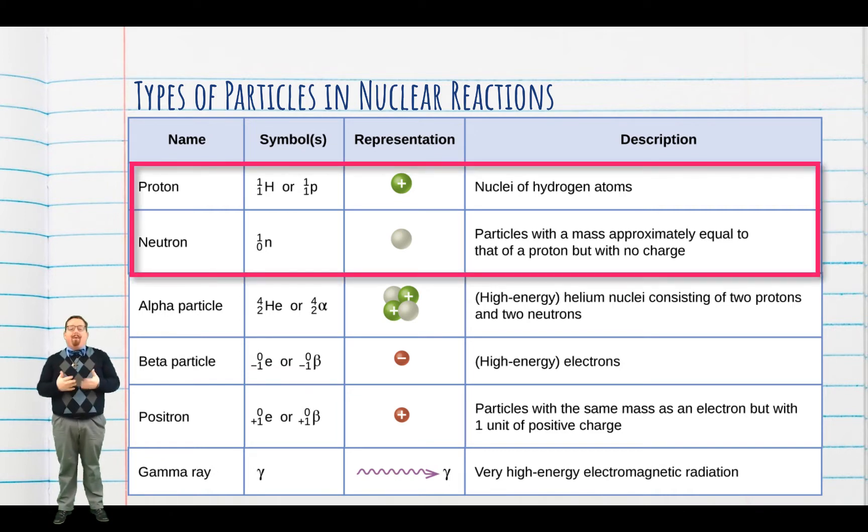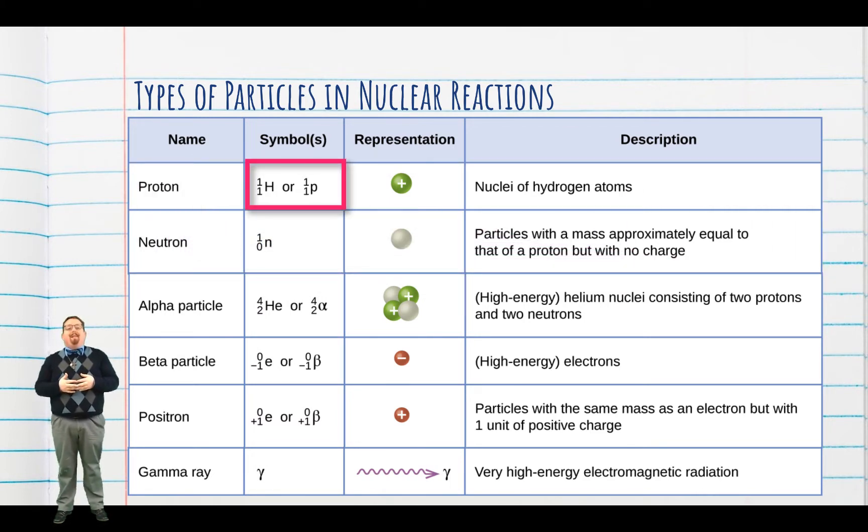Obviously, we have our protons and our neutrons, which we know make up the nucleus. Protons can be represented by these symbols. This tells us that we have one proton and the mass number is one. It's basically the nucleus of a hydrogen atom but without its electron. Then we have the symbol for neutrons, which tell us that they have the same mass as a proton but they have an atomic number of zero because there are no protons.